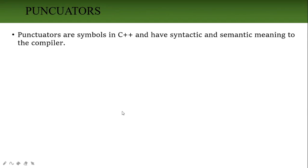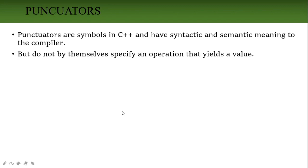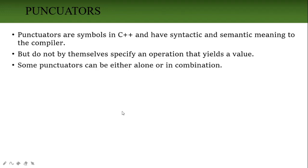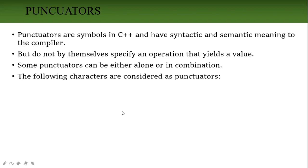Next is punctuator. Punctuators are special symbols that have some meaning — the compiler can understand that meaning. Depending on where they are written, the value will be changed, but they do not specify a value by themselves. Examples of punctuators include the not symbol, percentage symbol, ampersand symbol, star symbol, and other special characters used as punctuators.